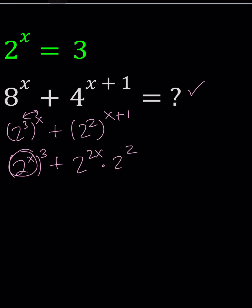Since 2^x = 3, this becomes 3^3, and this can be written as (2^x)^2 × 4. Since 2^x = 3 again, we get 27 + 3^2 × 4.